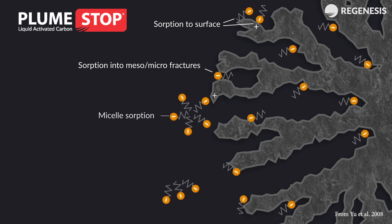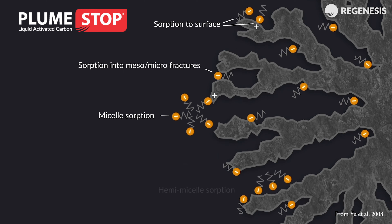So how much contaminant will stick to activated carbon, and what governs this interaction? This sticking to carbon is referred to as adsorption, where the contaminant is attracted to the carbon surface through physical and chemical forces. This adsorption is the result of a dynamic equilibrium governed by the chemical characteristics and concentration of the contaminant.